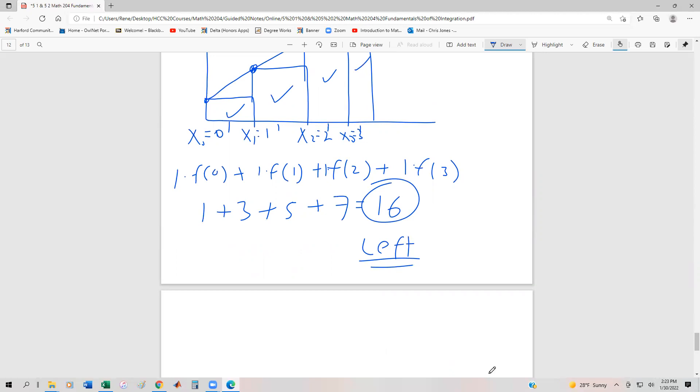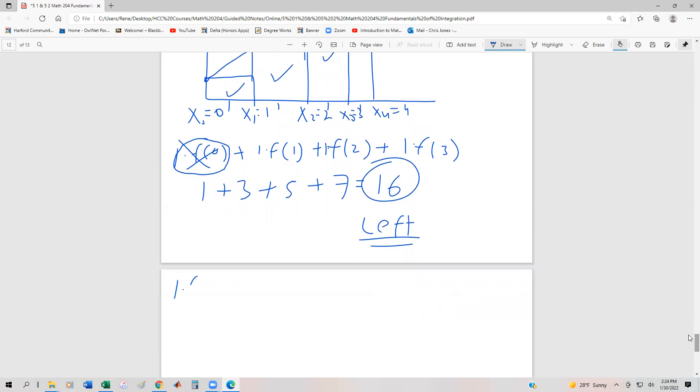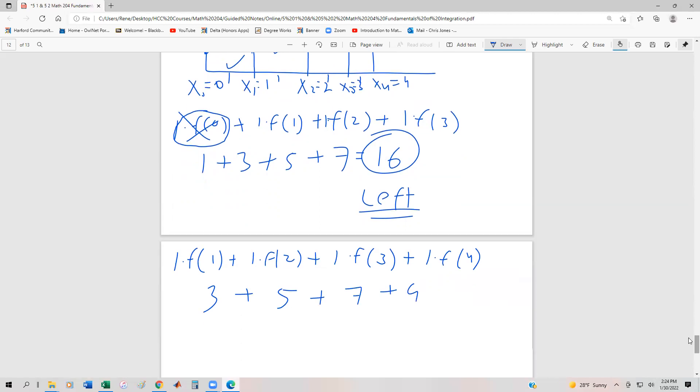Now for the right-hand sum, we just swap out the endpoints. It's 1·f(1) + 1·f(2) + 1·f(3) + 1·f(4), which is 3 + 5 + 7 + 9 = 24.